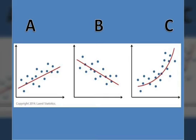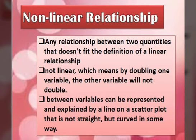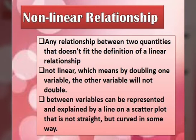Let us now proceed with the non-linear relationship. Non-linear relationship is any relationship between two quantities that doesn't fit the definition of a linear relationship. It is not linear, which means by doubling one variable, the other variable will not double. Non-linear relationships between variables can be represented and explained by a curved line on a scatterplot. The easiest way to differentiate a linear from a non-linear relationship is by mapping them on a graph.